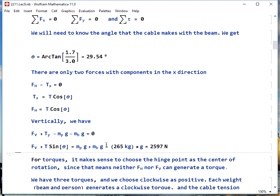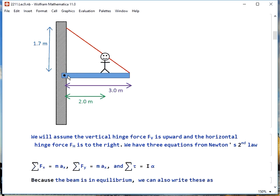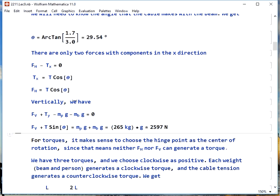Now we need to use the last equation, the torques. Here it makes sense to choose the hinge point as our center of rotation, because if we do that, we get rid of both FV and FH as far as things that could cause torques.